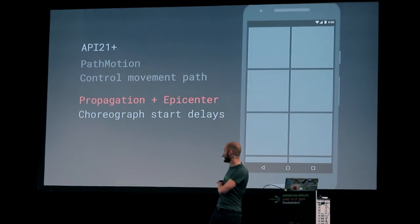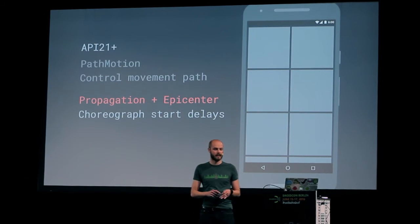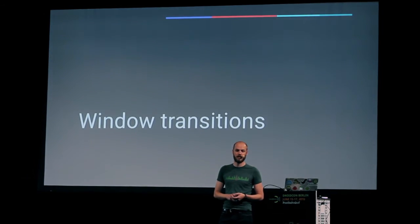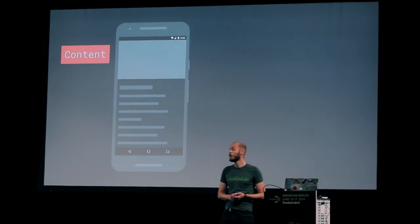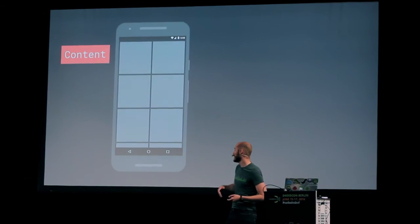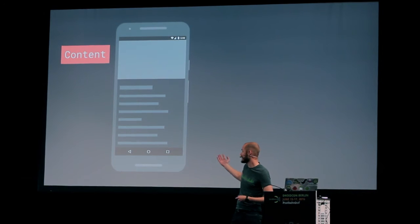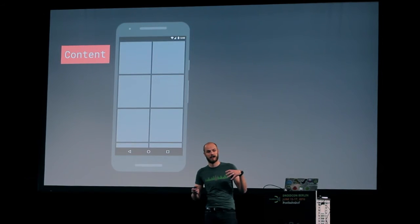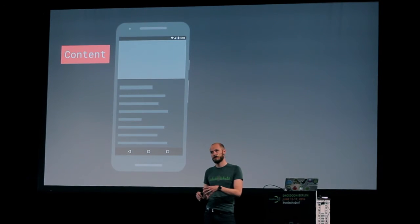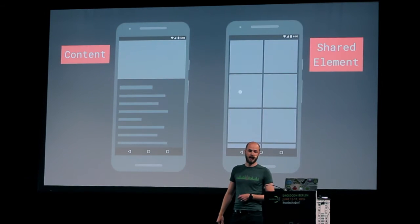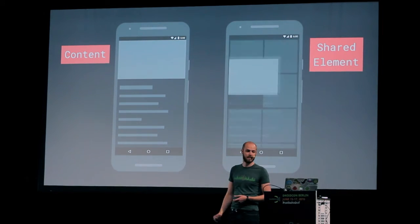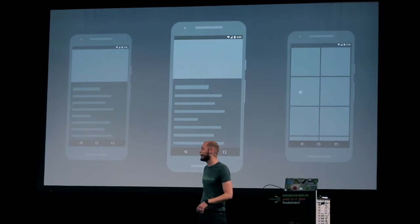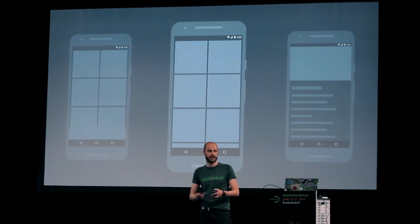After going through the core APIs and classes available, let's take a look at window transitions. There are several types — window content transitions basically means, like I said before, if you change the scene from one activity to another, the view fades in and slides from the bottom. Everything within the window is being transitioned. You can also have a shared element transition to take one element out of the screen and move it to another scene, and of course you can combine the two.